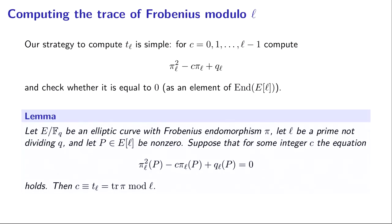So as I mentioned, our strategy to compute t_l is just to try all the possibilities. I'll use c to indicate a candidate for t_l. And we're just going to compute this endomorphism, π_l squared minus c times π_l plus q_l. In fact, we're going to be slightly more clever than that. We're going to pre-compute π_l squared plus q_l and then iteratively try computing multiples of π_l until we find one that matches.